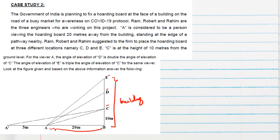C is at the height of 10 meter means BC length is given from the ground level. For the weaver A, the angle of elevation of D is double the angle of elevation of C. So angle of elevation of D means DAB is double the angle of elevation at C means CAB. So from this condition angle of elevation of D is double the angle of elevation of C, we got this expression.